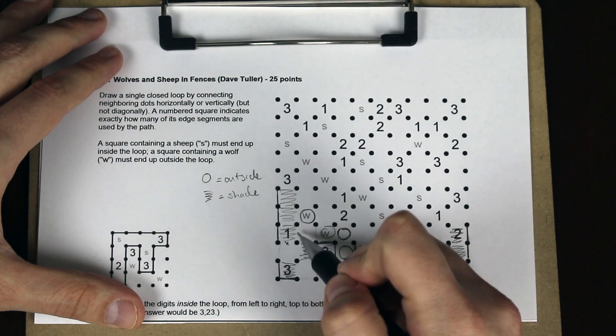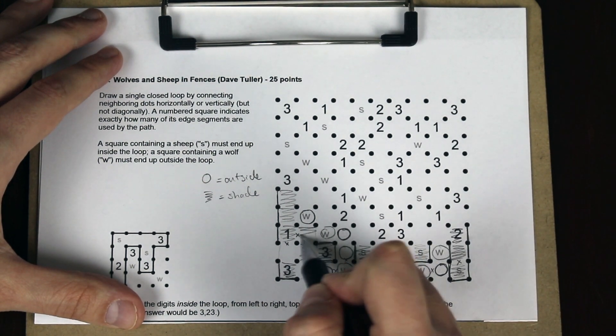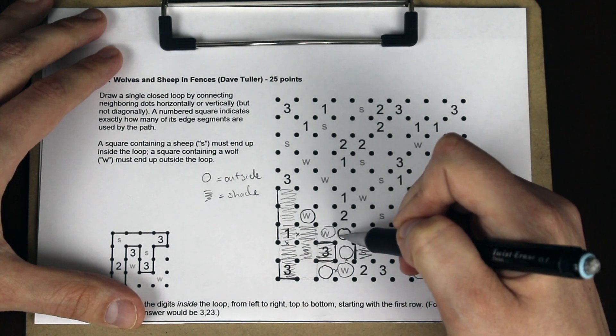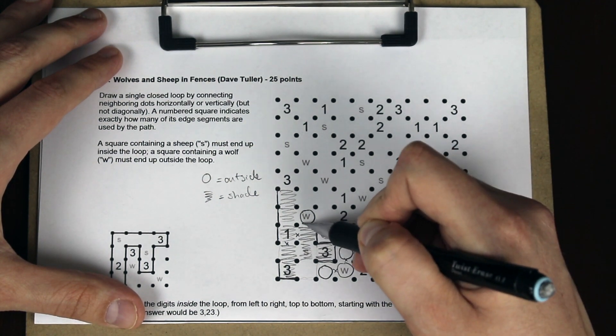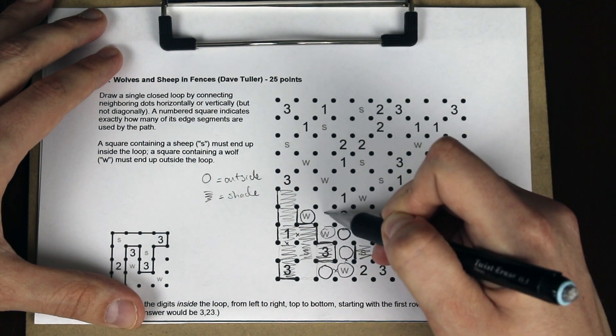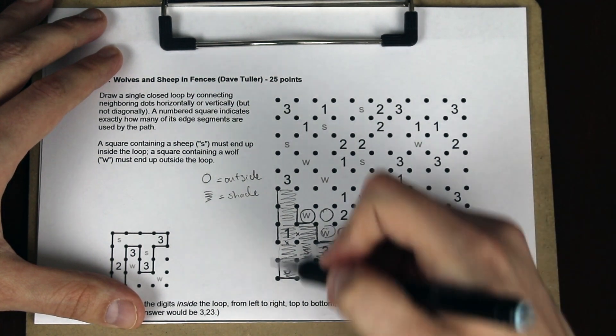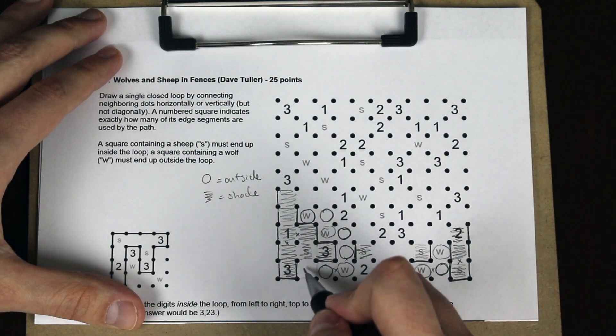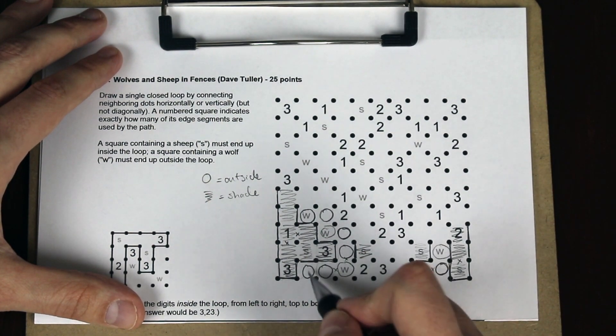That gives us some lines on the border here, which fills this one. It allows us to shade in a few more things. Now we can draw in the lines separating out the outer part of the loop from the inner. Avoid the checkerboard pattern, and fill in the border. That completes the three, and that region.